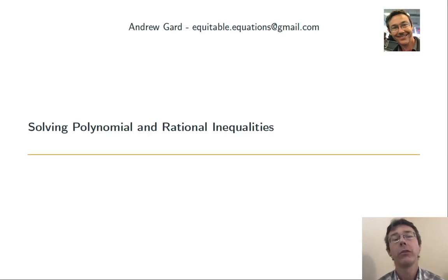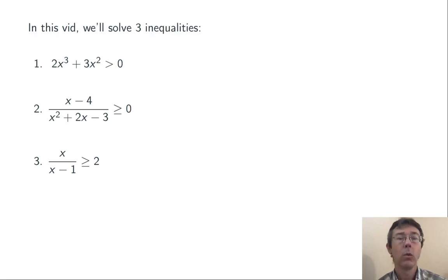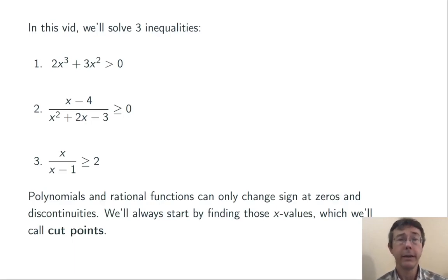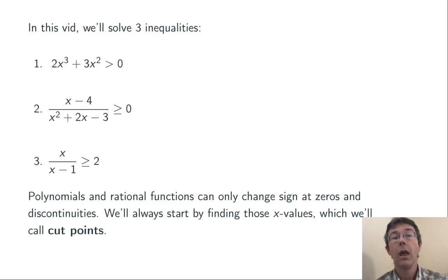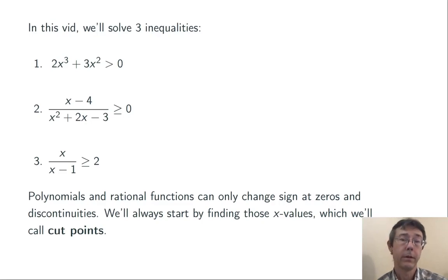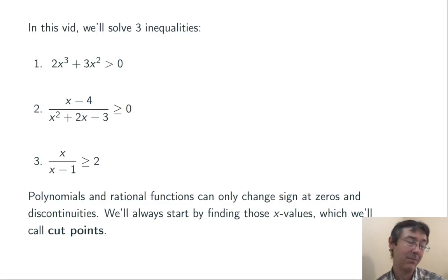Hey everybody, today we're solving polynomial and rational inequalities. We're going to work through three typical examples. In each case, the big idea is the same. Polynomials and rational functions can only change sign from positive to negative or negative to positive at two sorts of points: their zeros and their discontinuities. We'll call those cut points. Our idea is to find the cut points and then manually check a value in each interval to see where the function is positive and negative, where the inequality is true and where it's false.